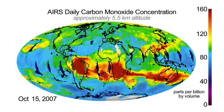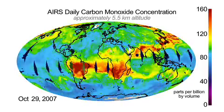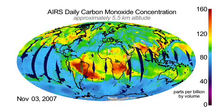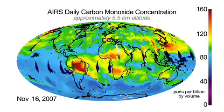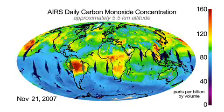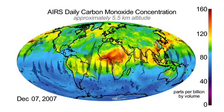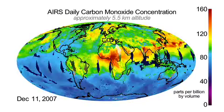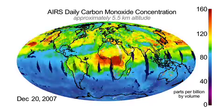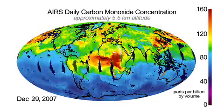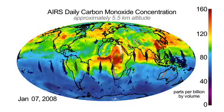Irregularly shaped areas of missing data mark the locations of some deserts and the thickest clouds where AIRS cannot perform carbon monoxide retrievals, or over the coldest portions of Antarctica where AIRS has difficulty making measurements. In general, AIRS carbon monoxide retrievals are available in weather conditions up to 80% cloudy.